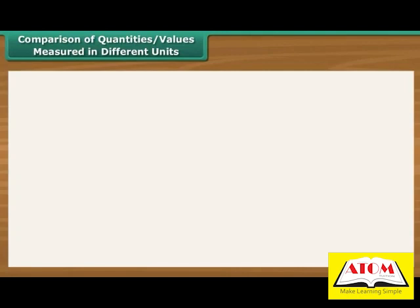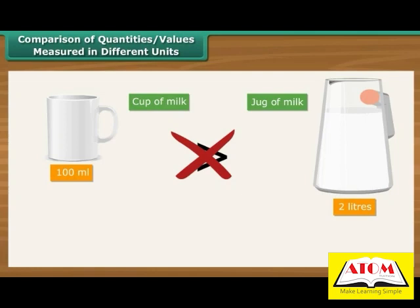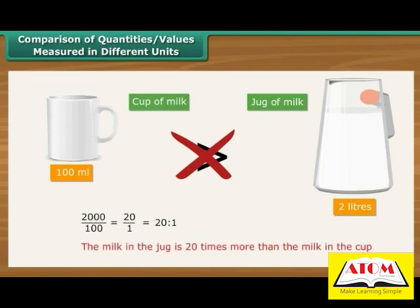Comparison of quantities and values measured in different units: Vinita has 100 milliliters of milk in a cup and 2 liters of milk in a jug. We cannot compare them directly since the units differ. We should express them both in the same units. Express 2 liters as 2000 milliliters. Now the ratio is 2000 by 100, which is the same as 20 is to 1. Therefore, the milk in the jug is 20 times more than the milk in the cup.